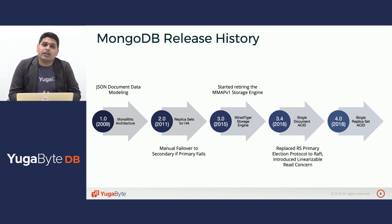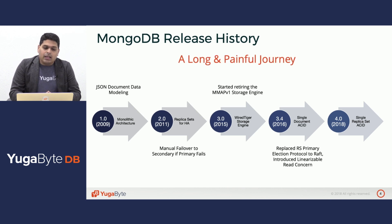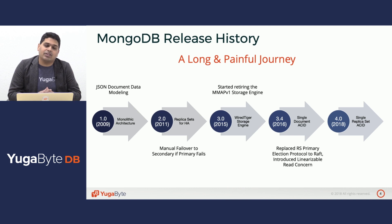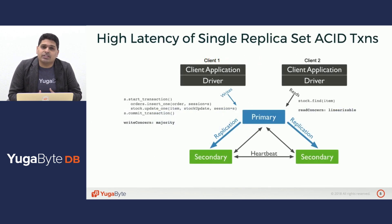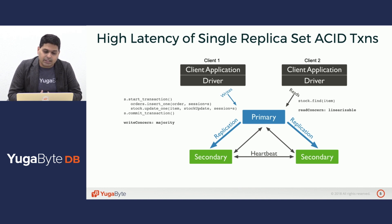Lastly, this year it added the ability to do multiple document transactions residing in a single replica set. Needless to say, this has been a long and painful journey for MongoDB to get to a distributed transactional database. Since it was never designed for this kind of an architecture, it still continues to have significant costs associated with its transactional architecture.